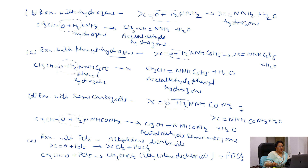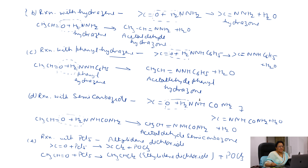The next reaction is reaction with semicarbazide. When one H of hydrazine is replaced by CONH2, we get NH2-NH-CONH2, which is known as semicarbazide. When acetaldehyde or any carbonyl compound reacts with semicarbazide, one water molecule is eliminated and we get a semicarbazone. Acetaldehyde gives acetaldehyde semicarbazone with semicarbazide.